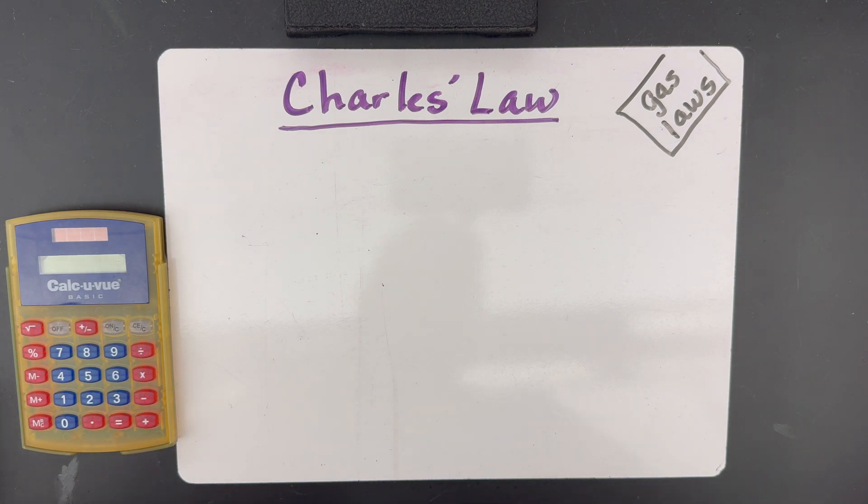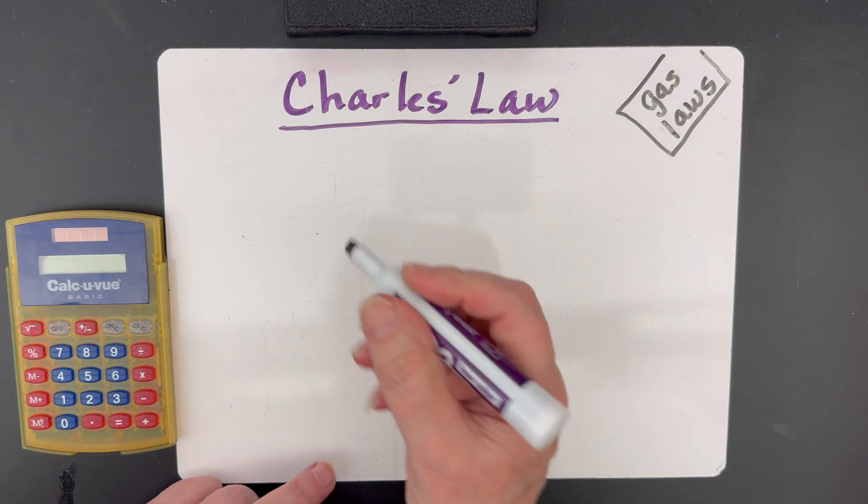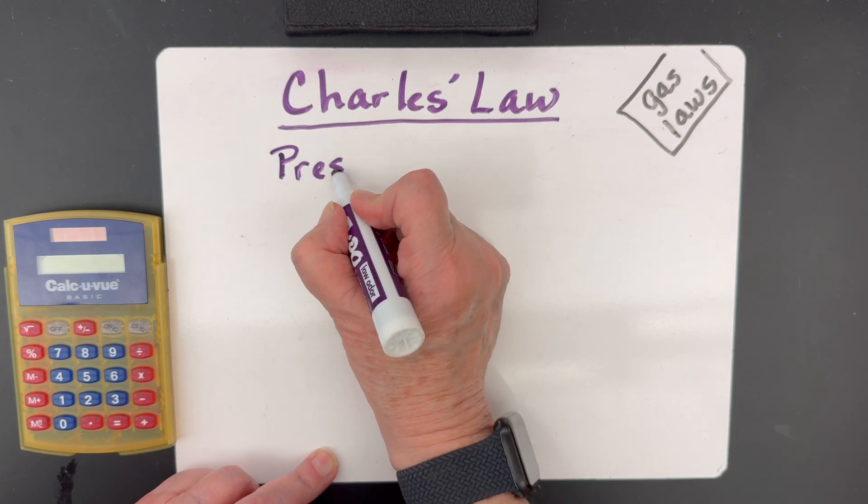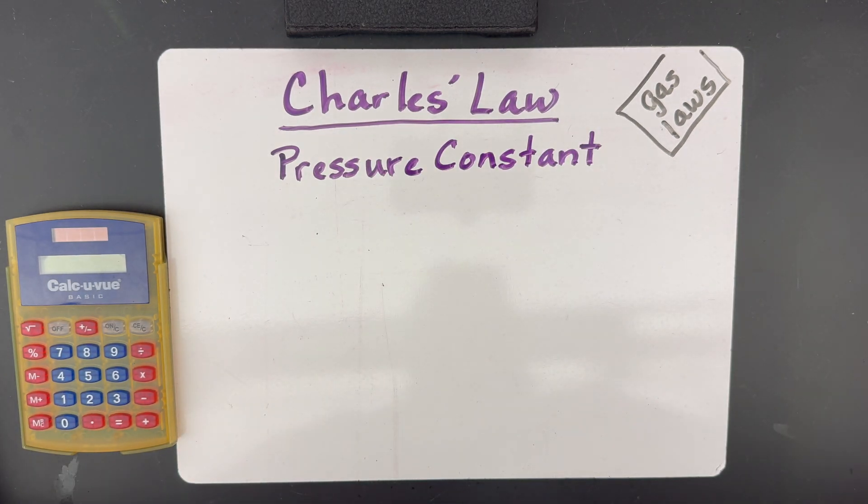In this tutorial, I'm going to talk to you about Charles Law. Charles Law is a gas law, and with Charles Law, our pressure stays constant. That means it's not changing. So your problems probably won't even mention pressure, or they do, they only give you one pressure.